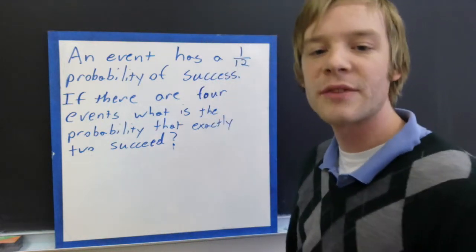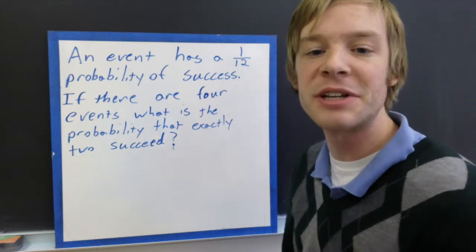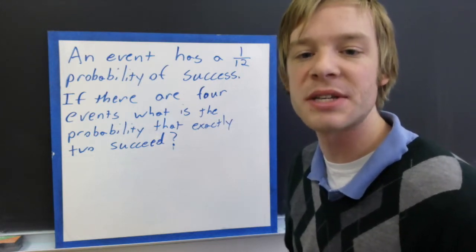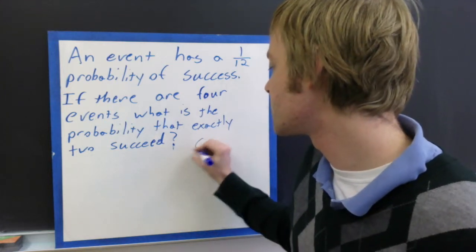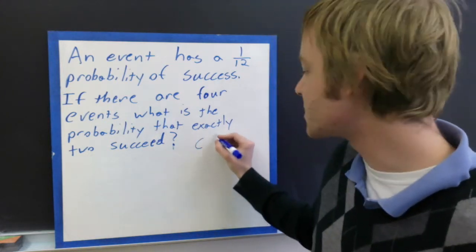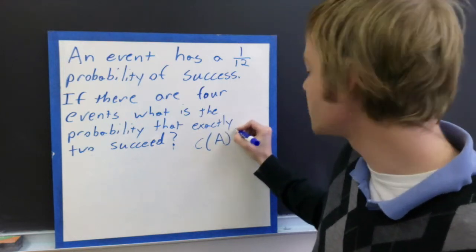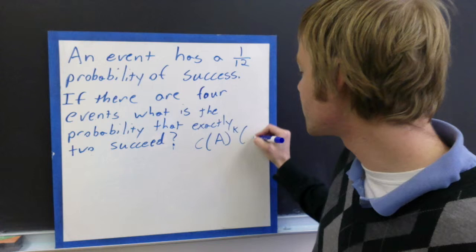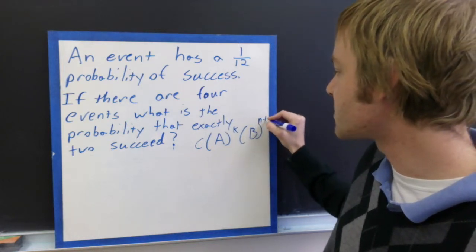An event has a 1 out of 12 probability of success. If there are 4 events, what is the probability that exactly 2 will succeed? Well, if you remember our formula, we had c, parentheses, a to the power of k, and then b to the power of n minus k.